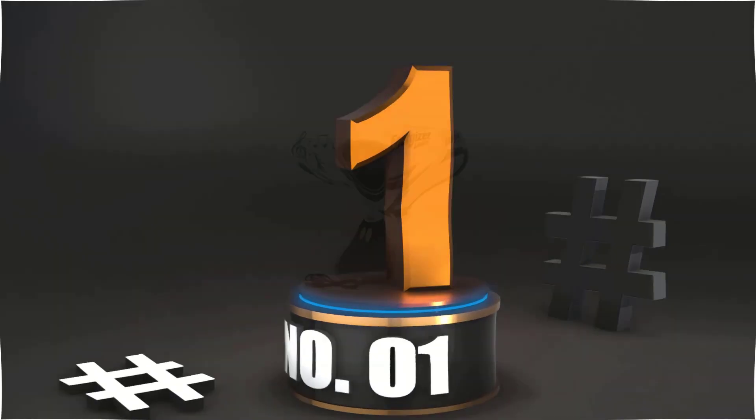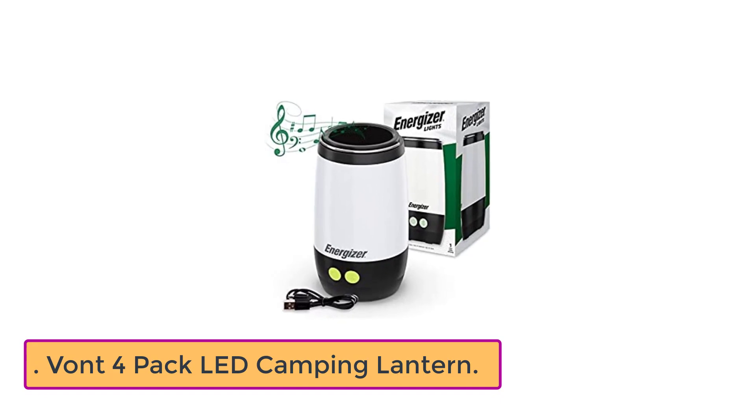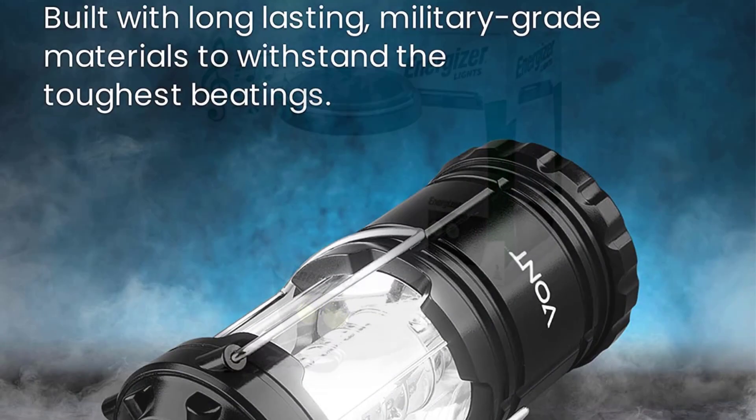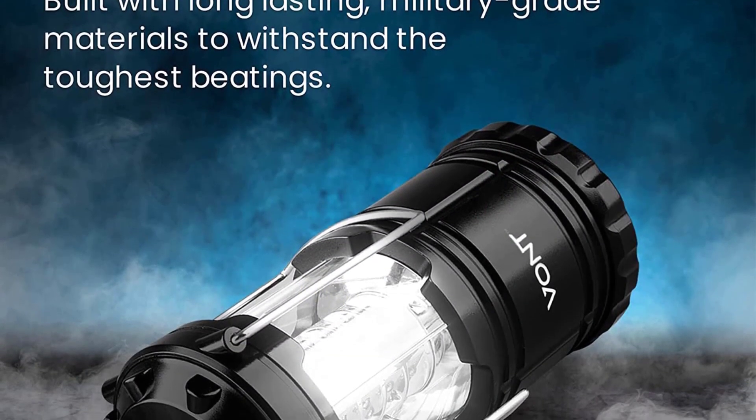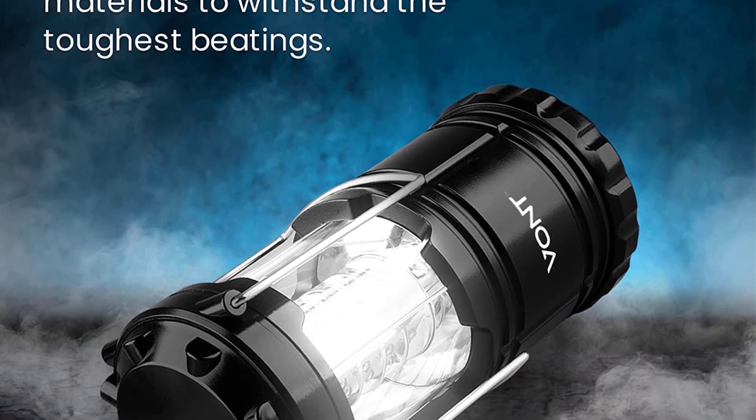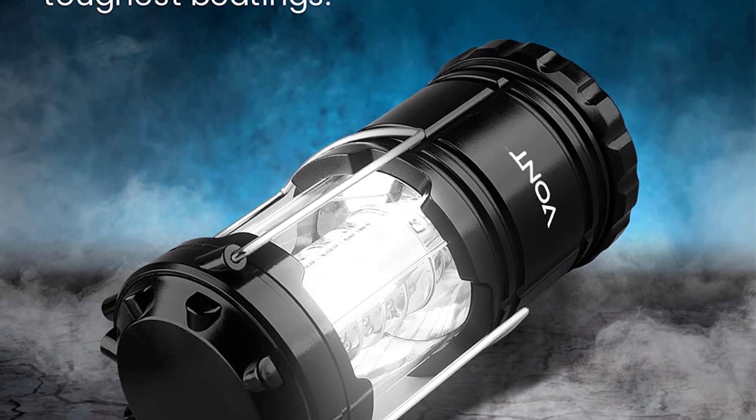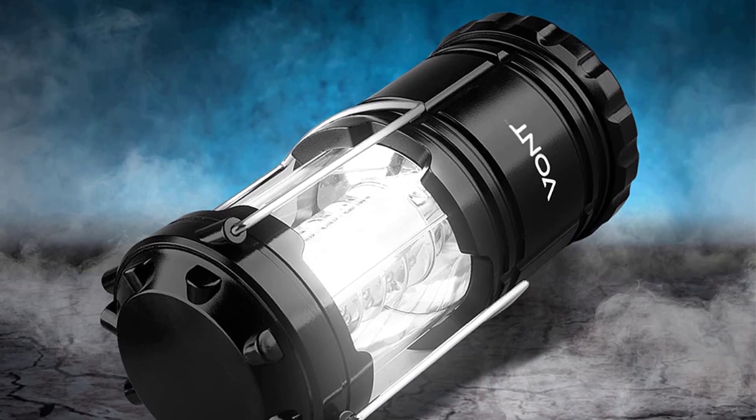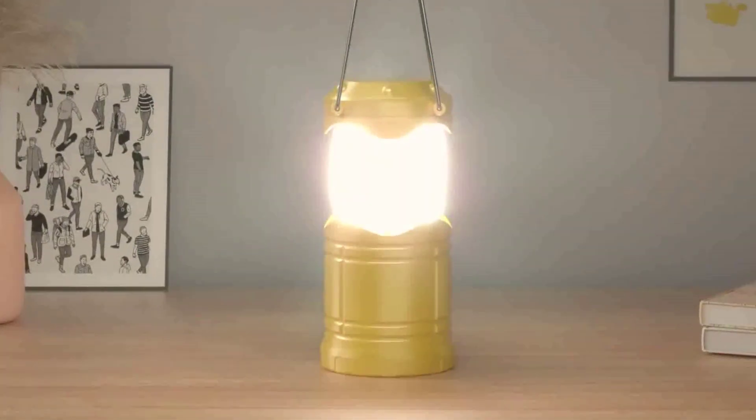Number one: Vant Four Pack LED Camping Lantern. Vant, one of the most well-known and reliable companies that sell a variety of portable lighting options, has a pretty good offering at the top of our list. In this package, Vant provides not just one but a total of four packs of solar powered LED light lamps.